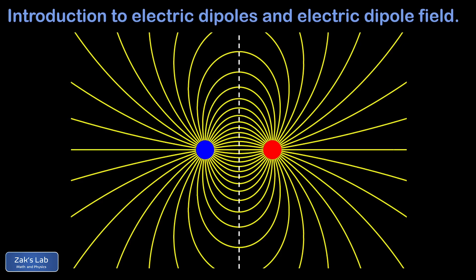We'll look at one more point — this time along the perpendicular bisector of the dipole. This point has a special symmetry: it has the same distance to each of the charges, so the contributions from each charge have the same magnitude. The contribution from the negative charge points toward it, and the contribution from the positive charge points away from it. These two vectors have vertical components that are equal in magnitude and opposite in direction, so when we do the head-to-tail addition, the vertical components cancel and we end up with a net electric field vector that points exactly horizontally — tangent to the field line in the diagram.